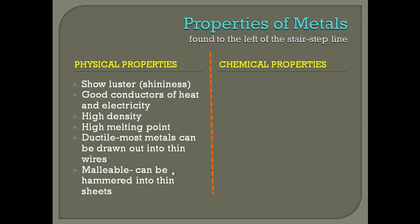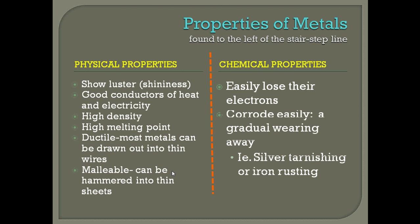Now let's talk about the chemical properties of metals. First, they are going to lose their electrons easily. We won't go deep into this now, but when we get into ions and bonding, we'll discuss what it means to lose electrons — metals want to give away their electrons. The last chemical property is that metals will corrode easily. If you've seen a piece of metal with rust on it, that's showing it's being worn away — it's corroding.